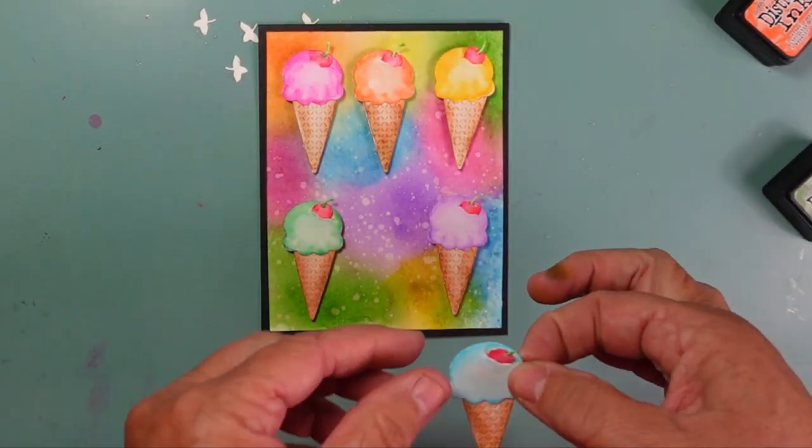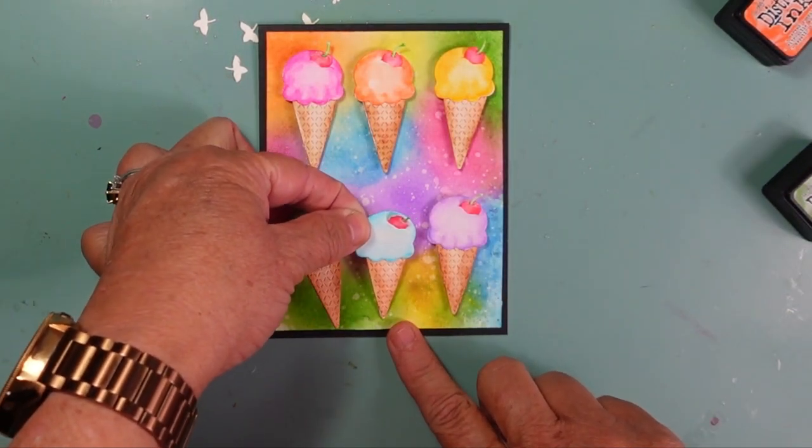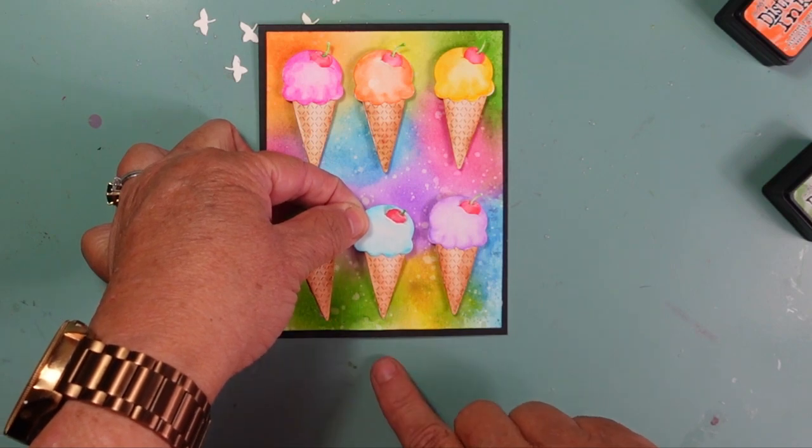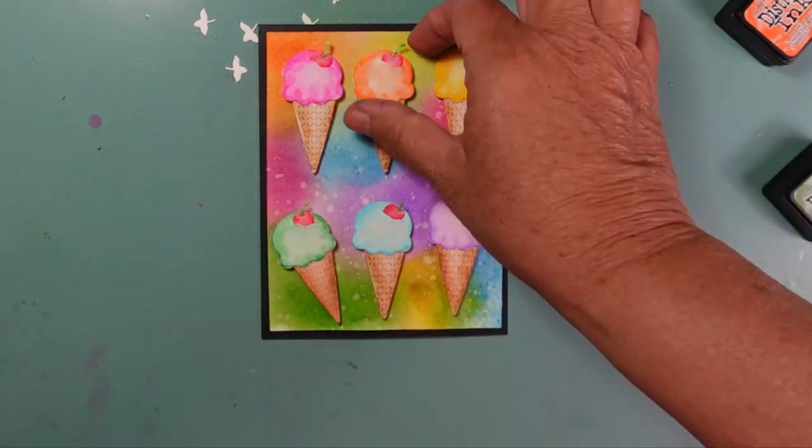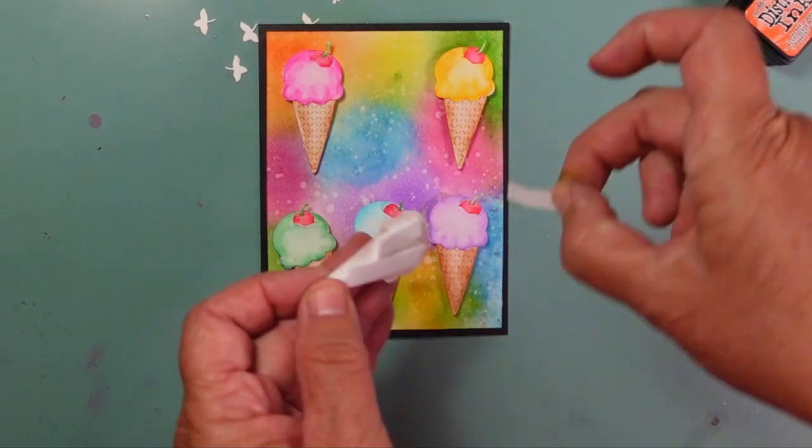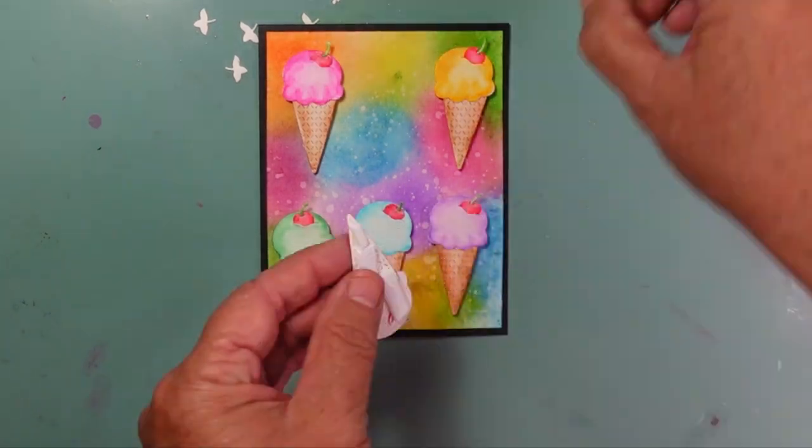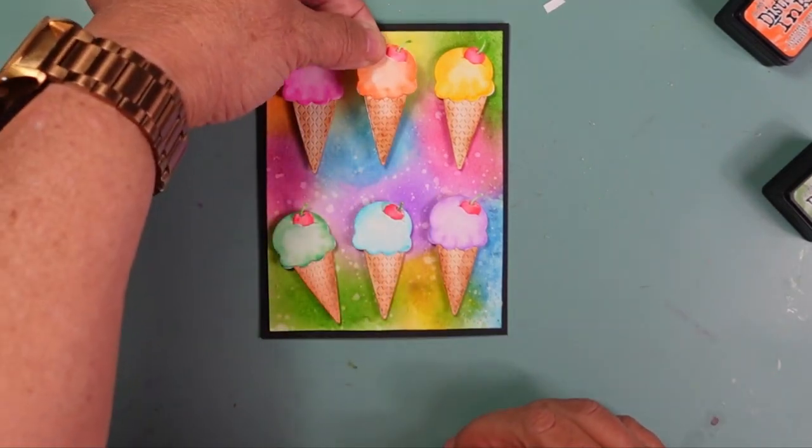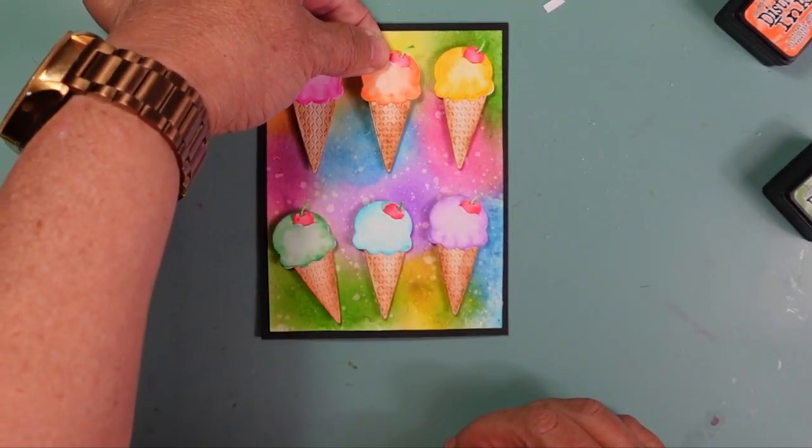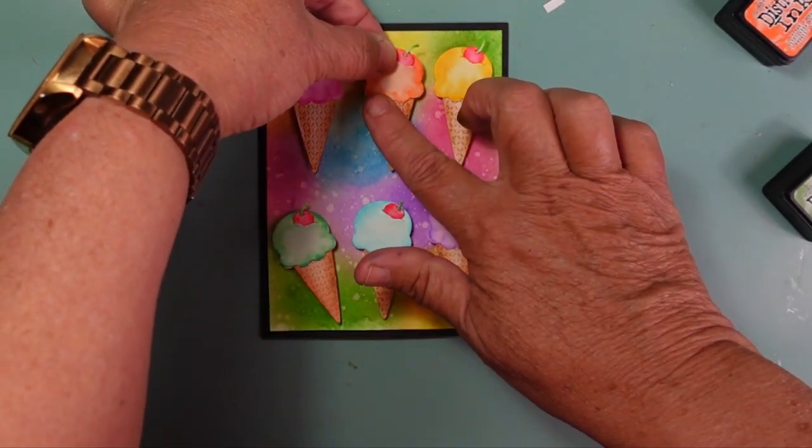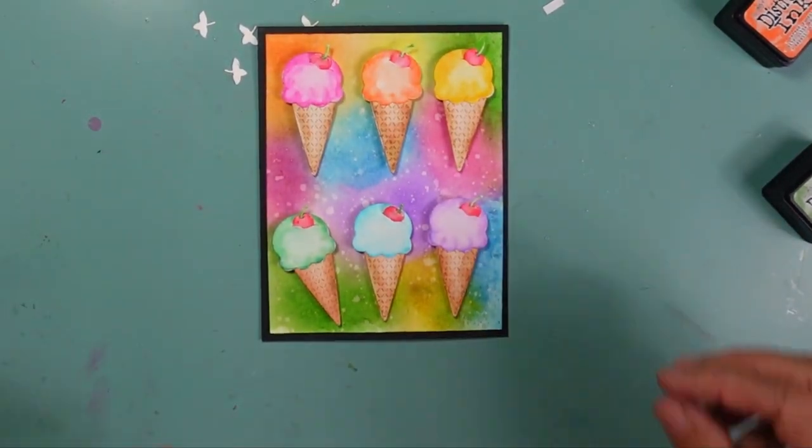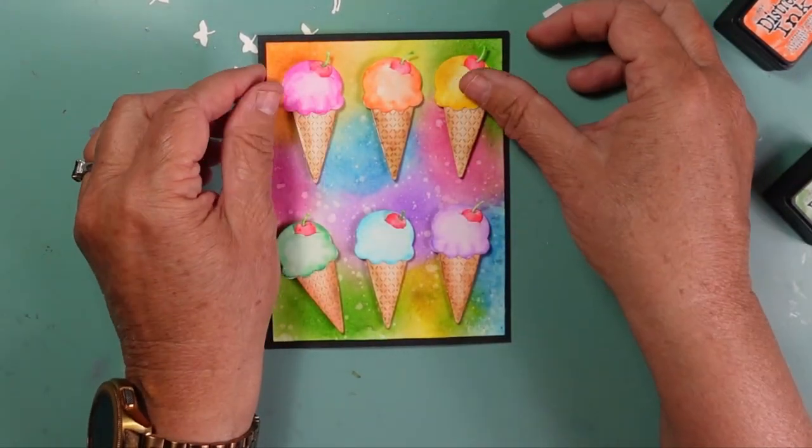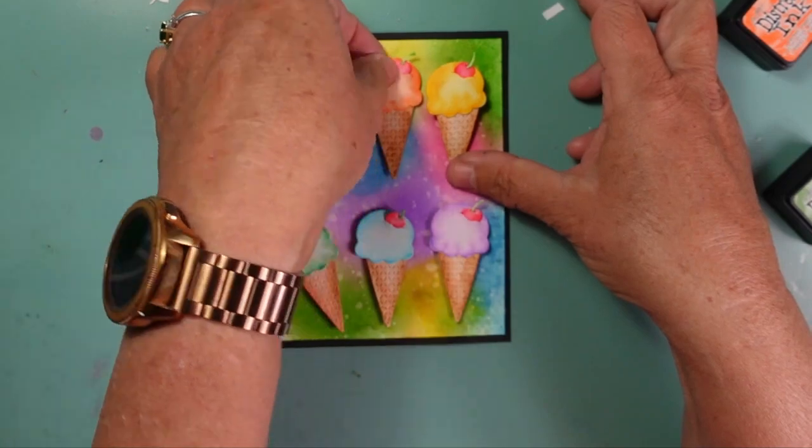You'll see that once I remove the release tape, I will fuss with my middle ice cream cones for just a few minutes, making sure that I have them aligned straight, making sure that I like the distance between the two cones top and bottom. Once I get those aligned the way that I like, I'll move on to adding the rest of them to my card.